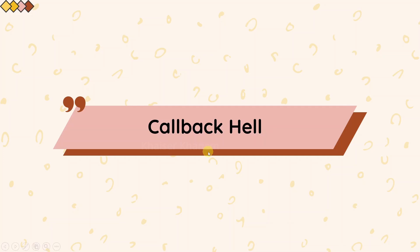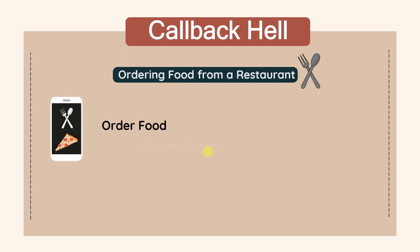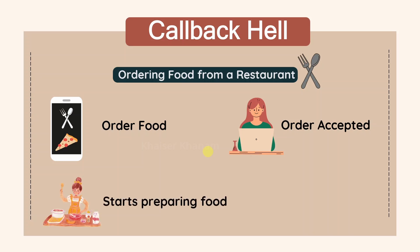To understand callback hell, let us first understand the scenario. Just imagine you want to order some food from a restaurant, and here we are having four steps. First step: you should order the food. Second: your order will be accepted. Third: once the order is accepted, your food will start preparing. And finally, your food will be delivered. These are the four steps involved when you want to order some food from a restaurant.